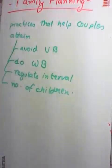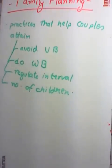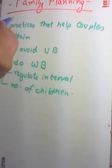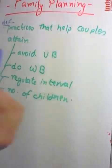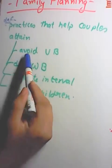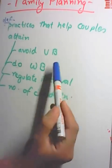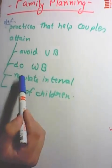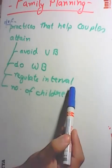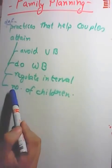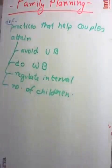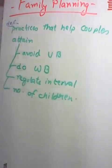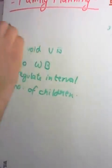So the definition of family planning is: practices that help couples to attain certain objectives — avoid unwanted births, bring about wanted births, regulate intervals between births, and determine the exact number of children they want. This is the definition of family planning.